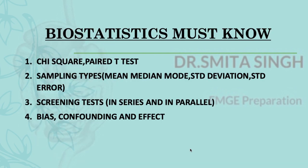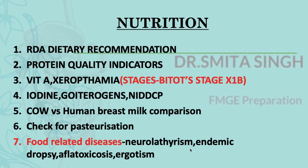Biostats is a subject many of us feel worried about, especially with the math. However, at most one calculation question may appear, so if you're strong on theory you can still score well. Focus on chi-square, t-test, sampling types, mean/median/mode, standard deviation, standard error, screening tests in series and parallel, and bias and confounding — types of bias, confounding, and their effects are really important.